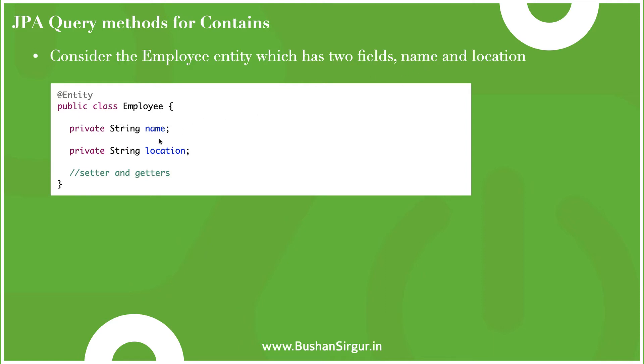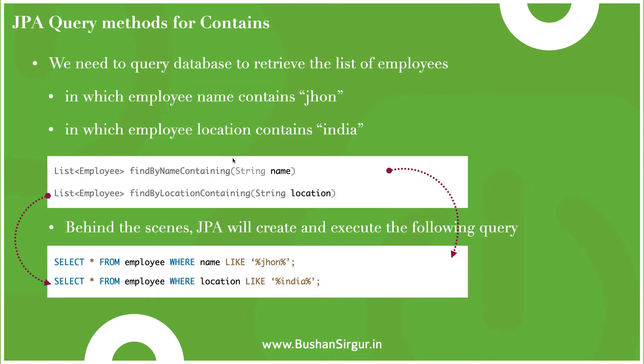Consider an Employee entity which has two fields: name and location. We need to query the database to retrieve the list of employees where the employee name contains 'John', or where the employee location contains 'India'. In order to achieve this requirement, instead of writing the SQL query manually,